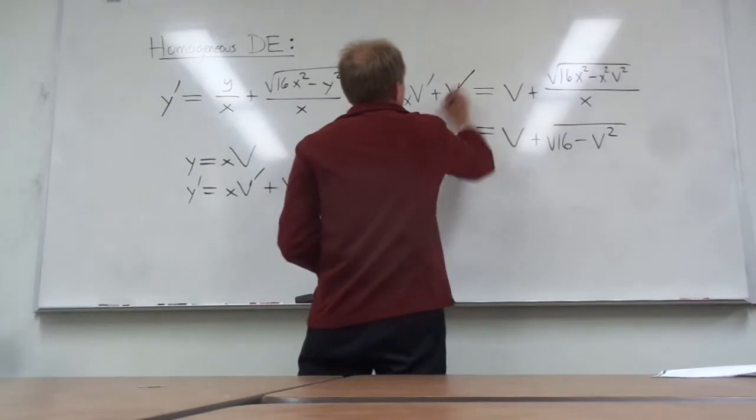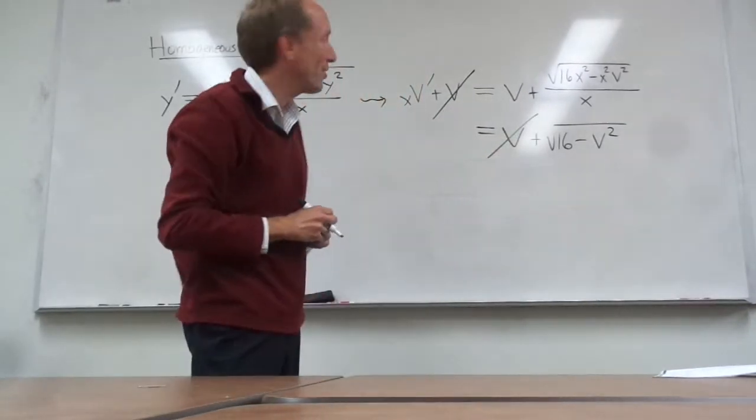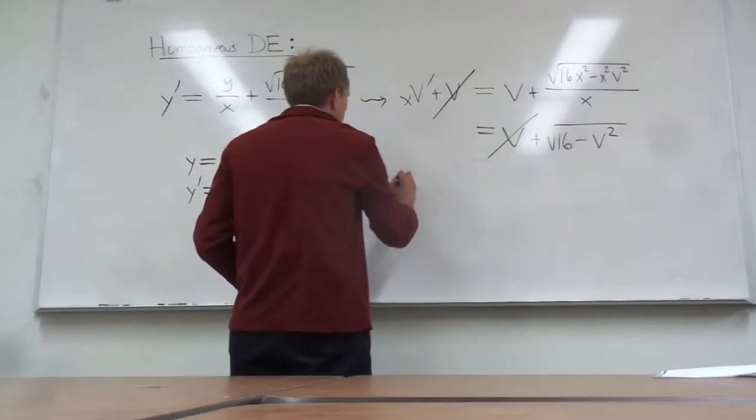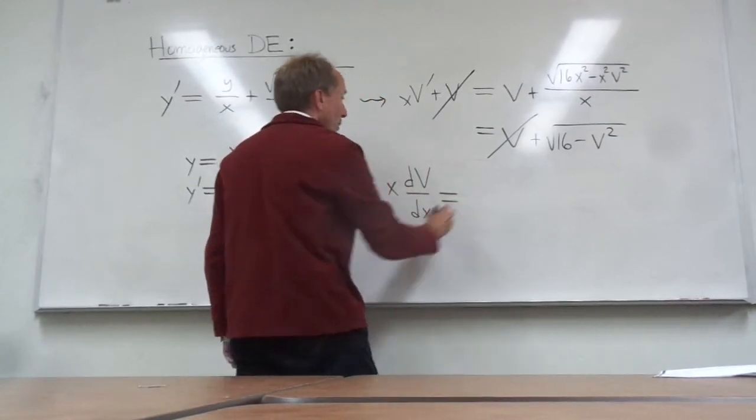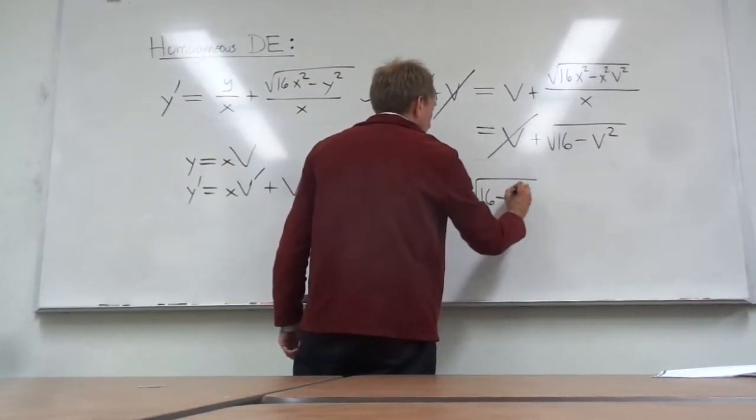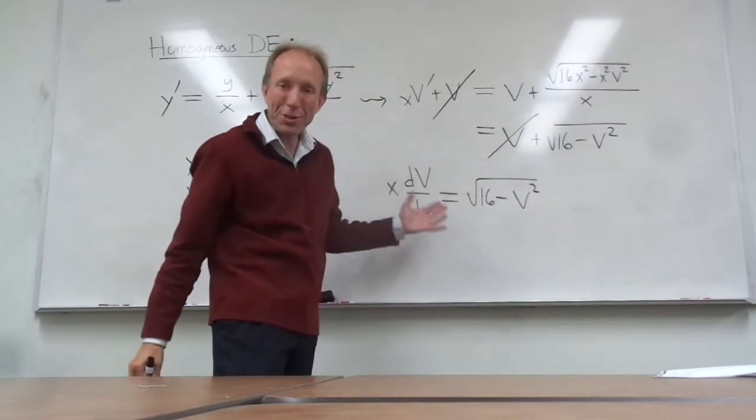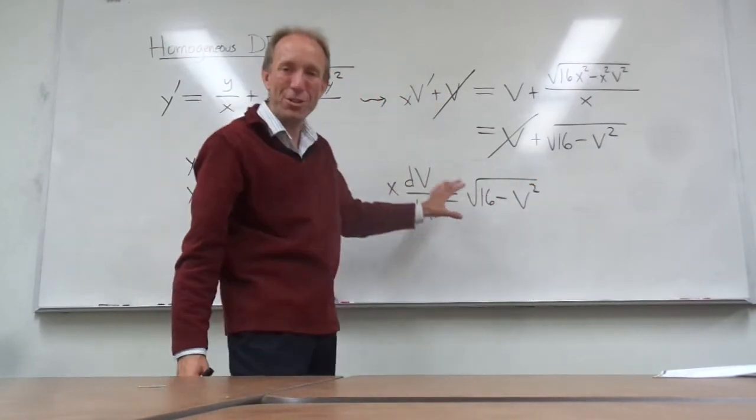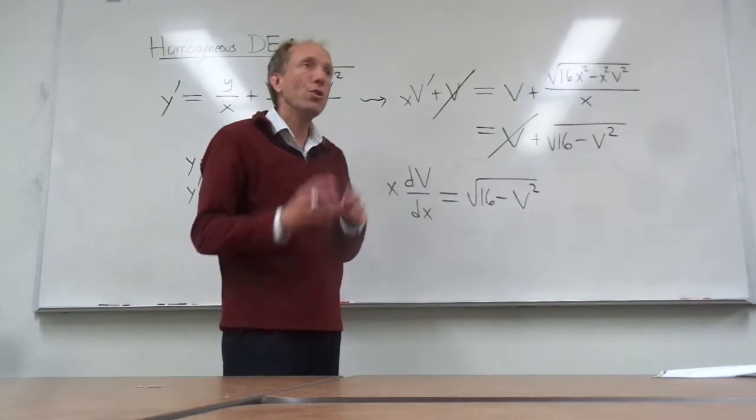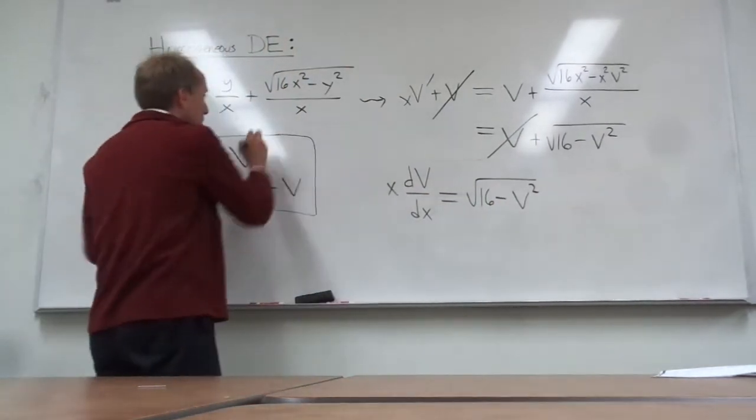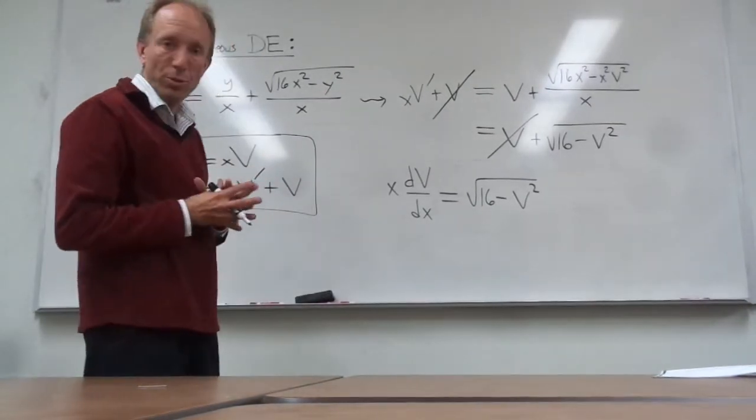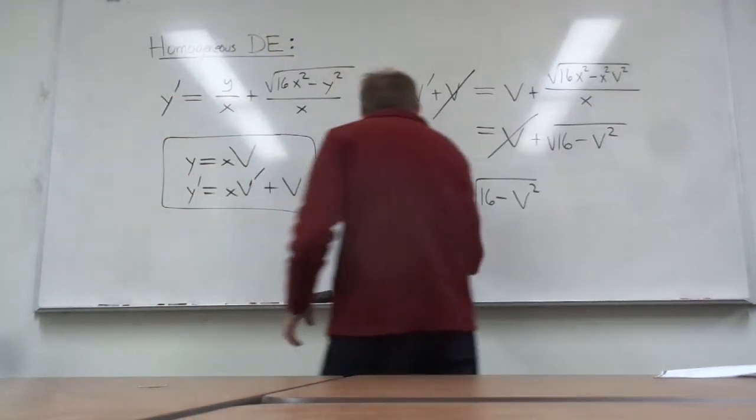The thing to notice is the v's cancel right here, which is very nice. And if I rewrite the v prime as dv over dx, well, then this is what I end up with. As advertised, you end up with a differential equation that is separable. So, homogeneous differential equations always become separable after you apply this change of variables to them. Okay? So, let's separate it.